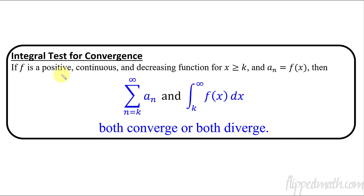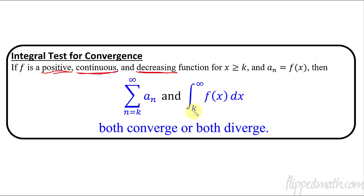Basically we have three things going on that we have to test first. Before we can use the integral test for convergence, the function has to be positive, it has to be continuous, and it has to be decreasing. Those three things have to happen for this integral test to work out. We're going to test this series for convergence by testing this integral — from k to infinity. We consider a_n a function of x. If we take the integral and evaluate it from k to infinity and it converges to a number, then the series converges. If this thing goes off to infinity, then it's diverging, and so therefore the series is also diverging.